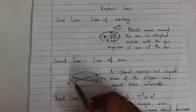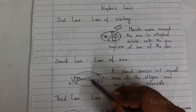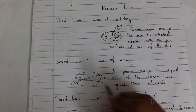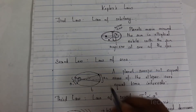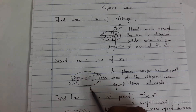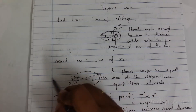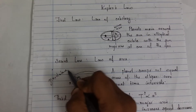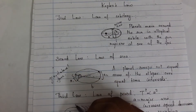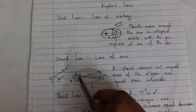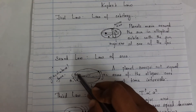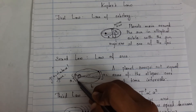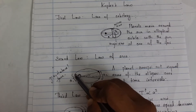It takes equal time intervals due to gravitational force. Because of gravitational force, when the planet is nearer to the sun, its speed will be increased and it moves very fast.